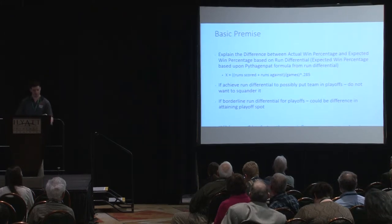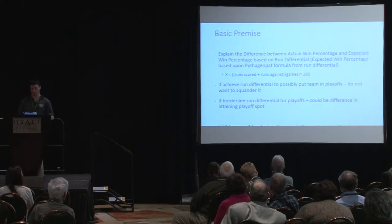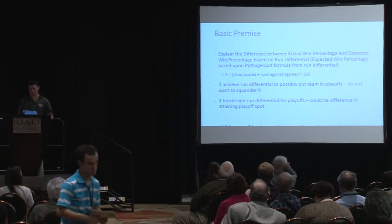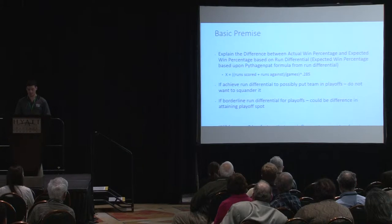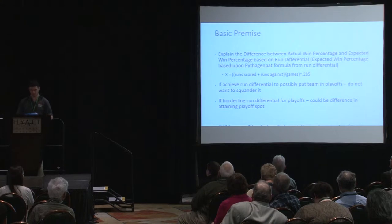The basic premise of our study is to explain the difference between actual win percentage and expected win percentage based upon run differential. The expected win percentage is based upon the Pythagorean formula from run differential, defined as runs scored plus runs against divided by games, all to the .285 power. If a team achieves a run differential that could put them into the playoffs, that team would not want to squander it. We're not looking at starting pitching and starting lineups. Rather, we are looking at performance of a team's bench, pitching relief, and pitching depth.